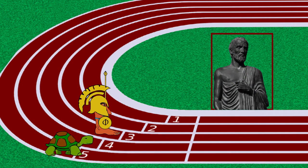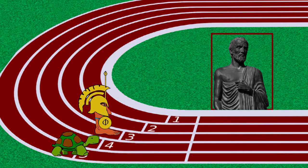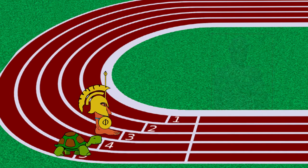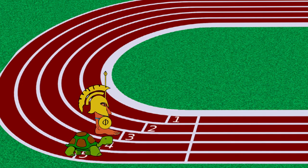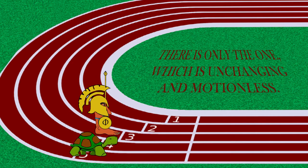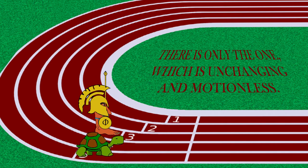In the previous video we talked about Parmenides and his idea that all things are one. We discussed how Parmenides argued against the plurality of things, against the existence of change and motion. According to Parmenides, our senses deceive us to think that there is such a thing as many things or motion. If we follow the path of truth, as he argued, we will come to the conclusion that there is only the one, which is unchanging and motionless.